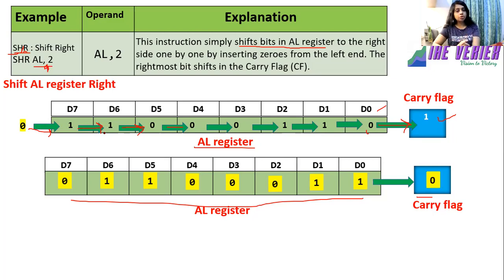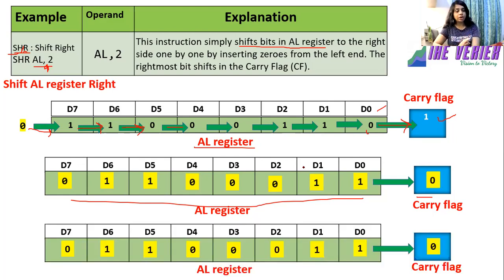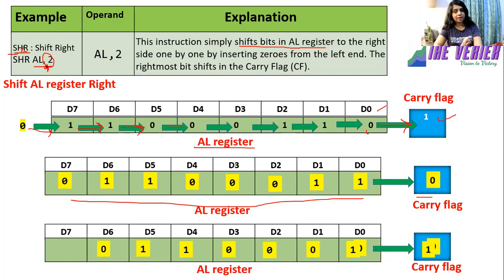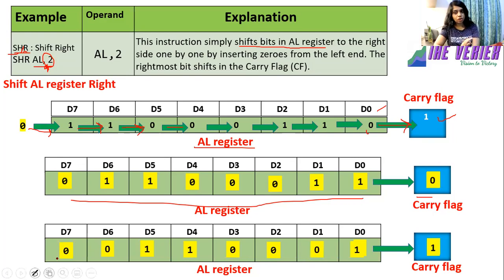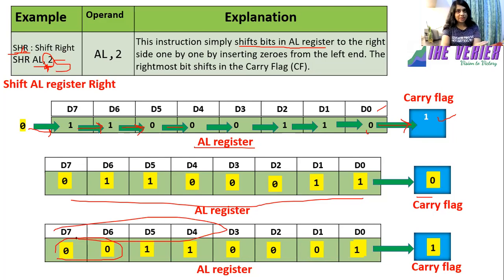This instruction says shift AL register towards right twice, so we have to shift it two times. After doing it once, the present contents of AL register are 0, 1, 1, 0, 0 and carry flag is 0. One more time we have to shift because it is written 2. Once again we shift towards right, and since we have shifted twice, we now have two zeros at D6 and D7. If there is a 5 instead, we would shift five times and find five zeros in the register.